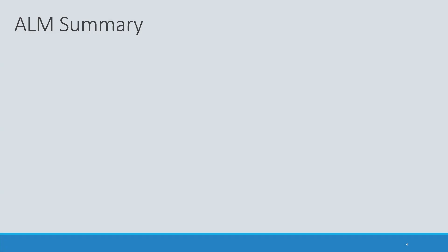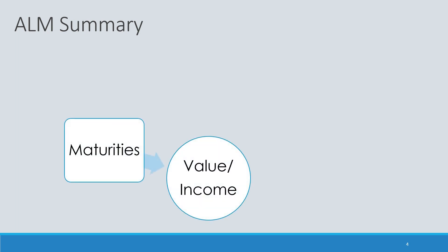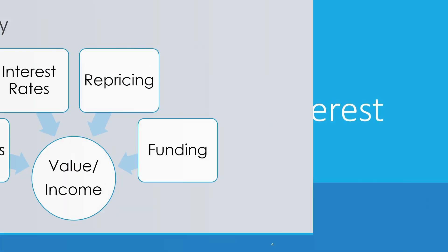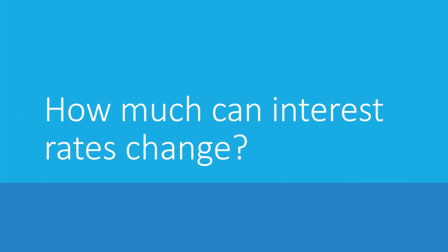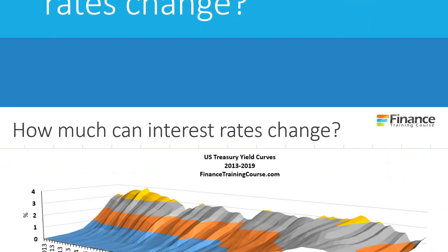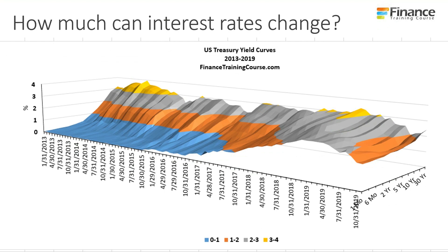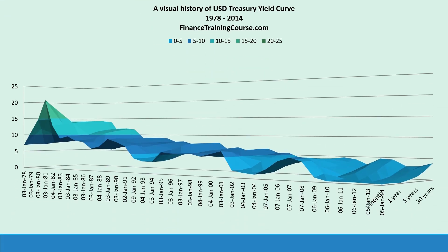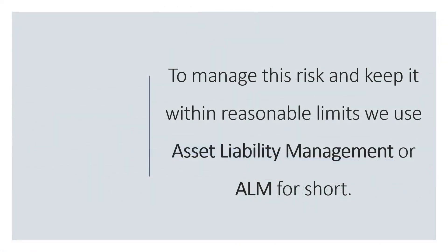What happens when interest rates shift at a different rate for 3 months versus 5 years? To answer this, we need to track measures for both income, earning, and value — because all three will shift when interest rates shift. A follow-on question is how much can interest rates shift in a given span of time? We need ALM to manage this risk and keep it within reasonable limits.